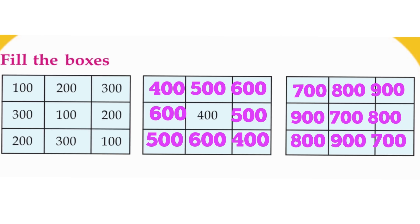And the third box: the first line should follow the sequence 700, 800, and 900. The second column: 900, 700, and 800. And the last column: 800, 900, and 700.